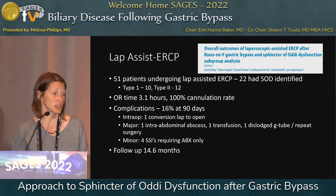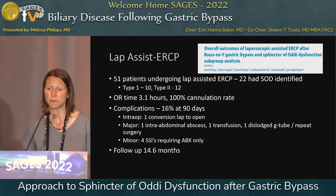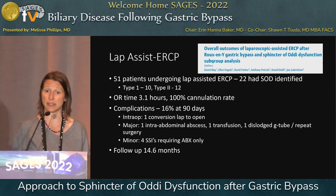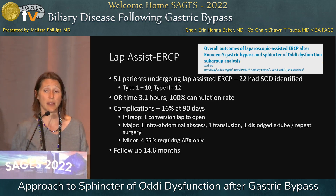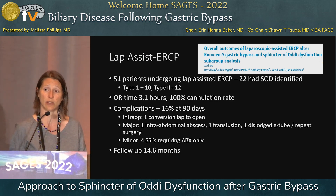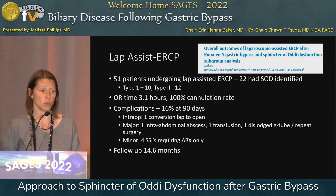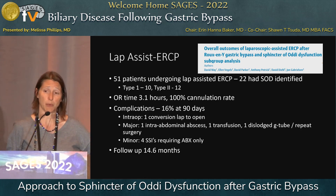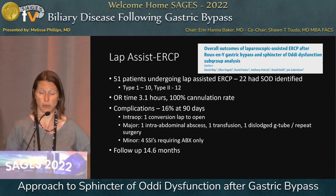This is a laparoscopic-assisted ERCP going through the transgastric approach. 22% of these patients had sphincter of Oddi identified as their cause. This was limited to the type 1 and type 2 groups — meaning patients who only had pain symptomatology without another abnormal finding were not put through that procedure. OR time was 3 hours, which is definitely reasonable. Complication rate was 16%: one was an intraoperative conversion from laparoscopic to open, and the other major ones included abdominal abscess — probably related to closure of the gastrotomy site and poor healing — and a dislodged G-tube that required repeat surgery for replacement. Follow-up was 14 months for this group.